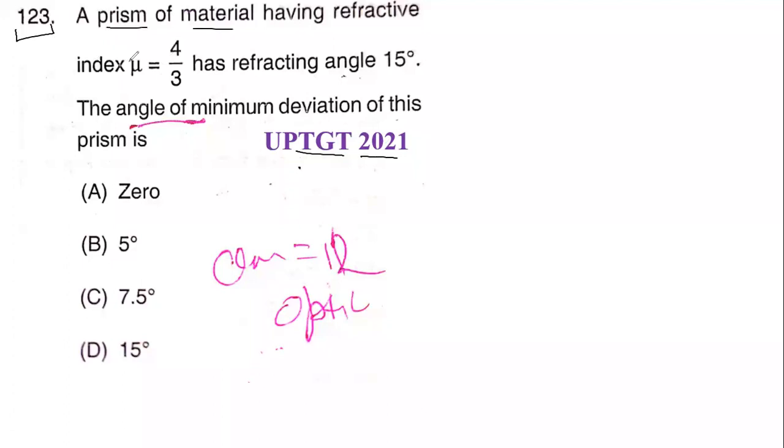A prism of material having refractive index μ = 4/3 has refracting angle 15°. The angle of minimum deviation of this prism is... For the angle of minimum deviation, generally we have this formula.